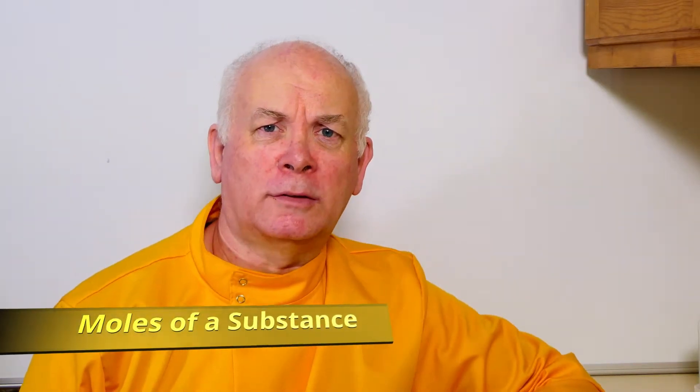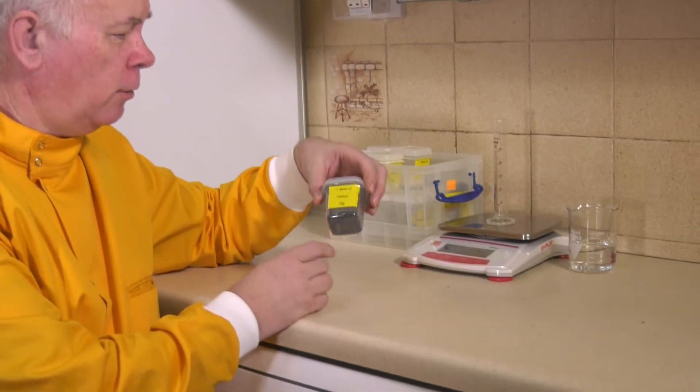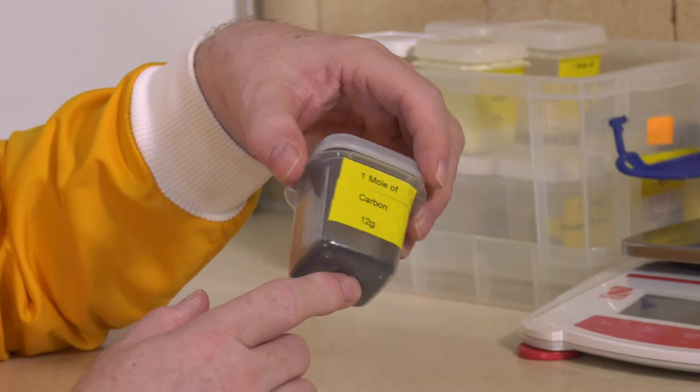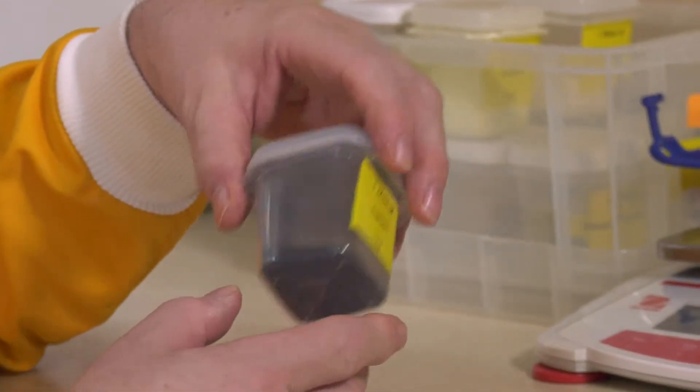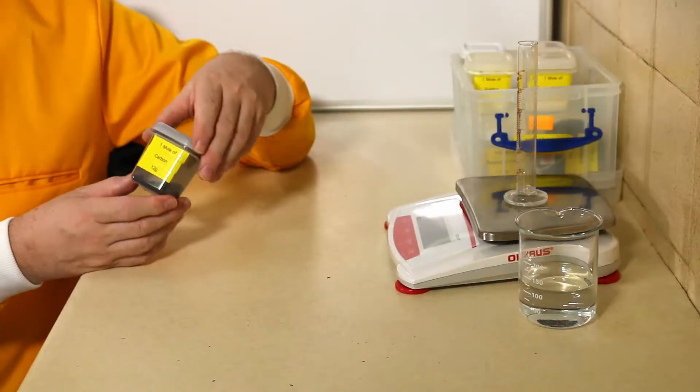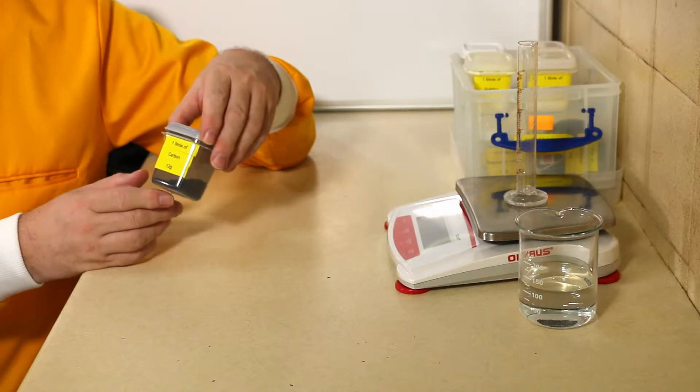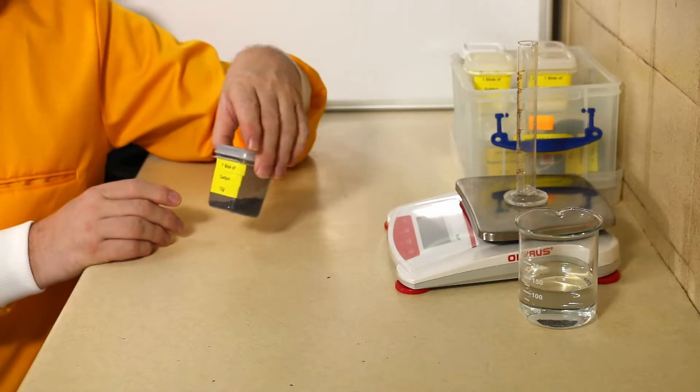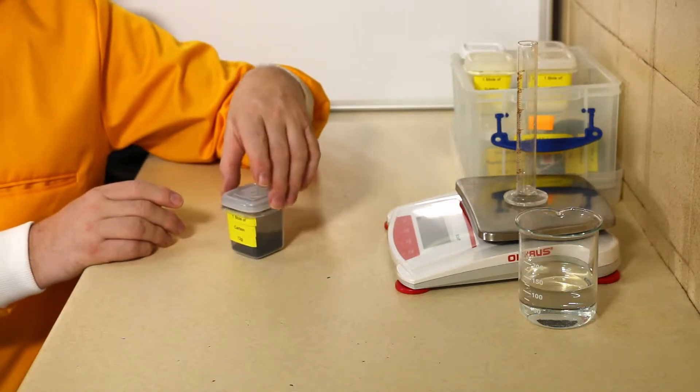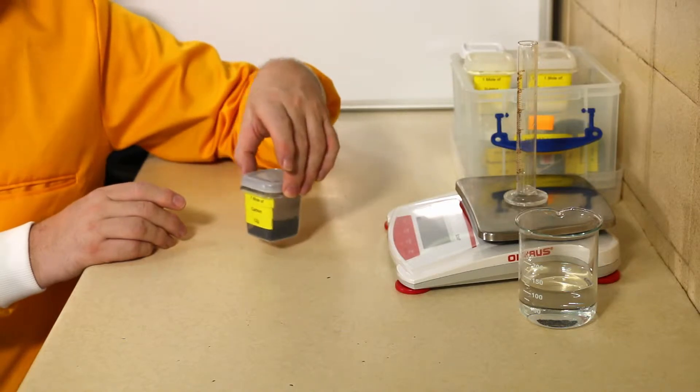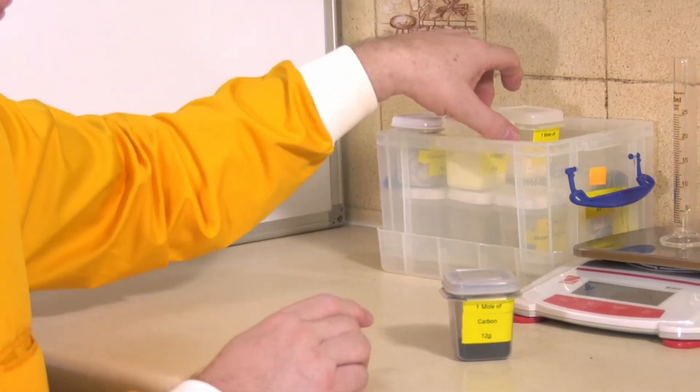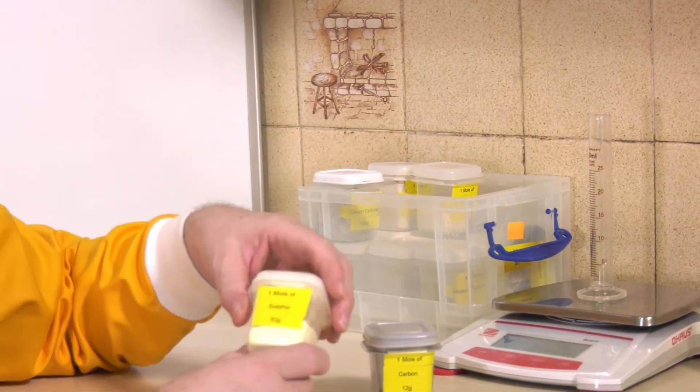A question I'm often asked is what's a mole? What does it mean? Well, it is the amount of substance. Here I've got one mole of a substance - this is carbon - and it contains 12 grams of carbon, which is the same as its relative formula mass or relative atomic mass.